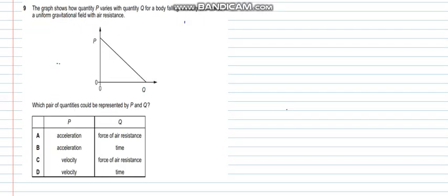Question number 9 says that the graph shows how quantity P varies with quantity Q for a body falling vertically downwards in a uniform gravitational field with air resistance P versus Q. So which pair of quantities could be represented by P and Q. So let's do a equation form analysis for this question. That's a straight line. So this would make up the form Y equals minus MX plus C. The gradient is negative.